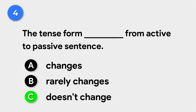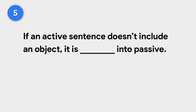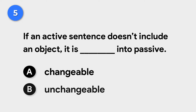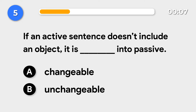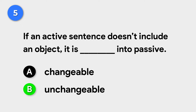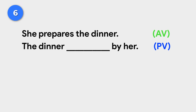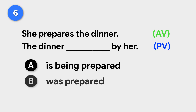The tense form doesn't change from active to passive sentence. If an active sentence doesn't include an object, it is unchangeable into passive. Change the following active sentences into passive voice.